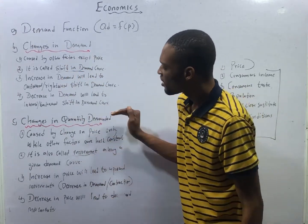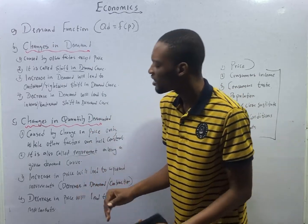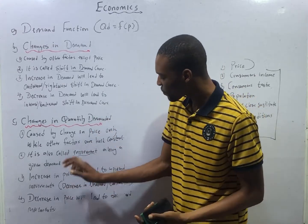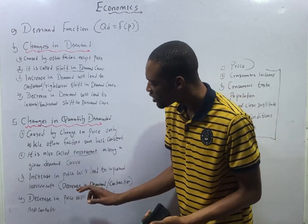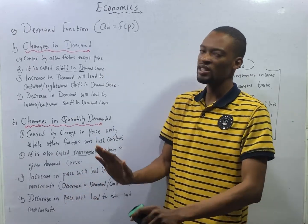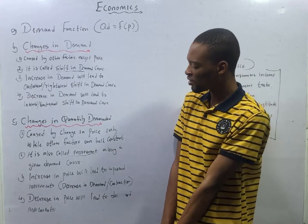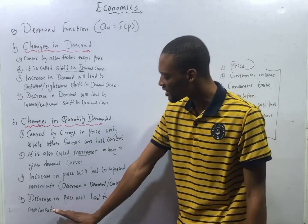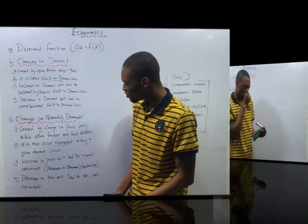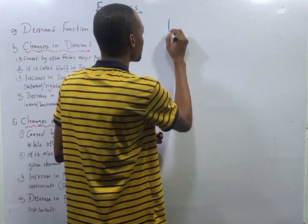Changes in quantity demanded only has to do with price. An increase in price will lead to upward movements, that is a decrease in quantity demanded — as price increases, quantity demanded drops. And a decrease in price will lead to downward movements.